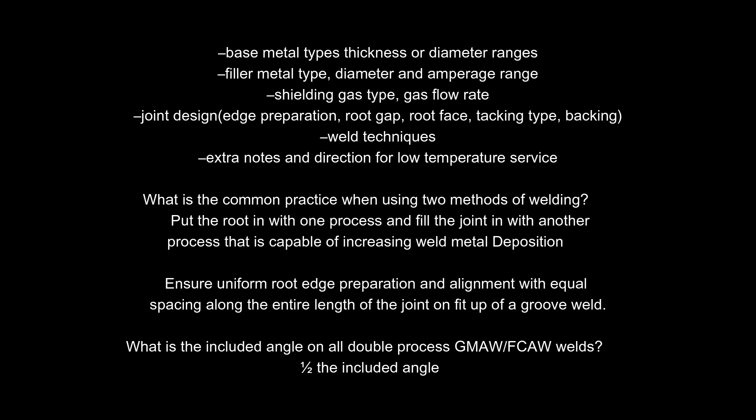What is the common practice when using two methods of welding? Put the root in with one process and fill the joint in with another — a process capable of increasing weld metal deposition. Ensure uniform root edge preparation and alignment with equal spacing along the entire length of the joint on fit-up of a groove weld. What is the included angle on all double-processed GMAW/FCAW welds? One-half the included angle.